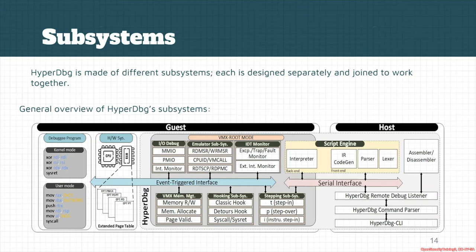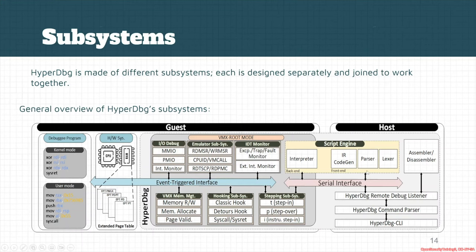This is the general overview of the HyperDBG subsystem. We have a debugging program which has some of its parts in user mode and other parts in kernel mode. We divided everything into different extended page tables, which I'll explain later. Some parts are executed in VMX root mode, while there is a connection between the guest and the host. The host tries to debug the guest, and this connection is a serial interface or can be other interfaces.